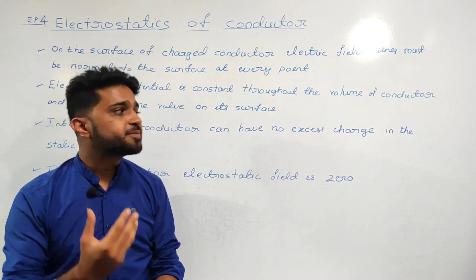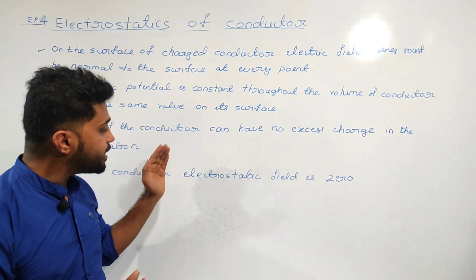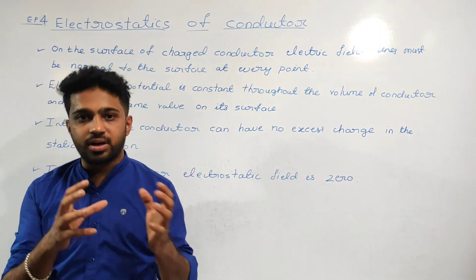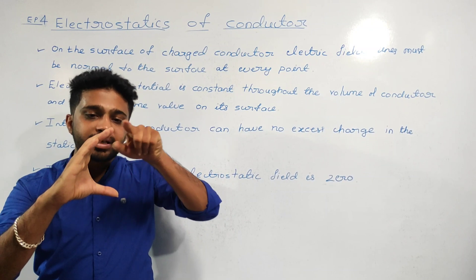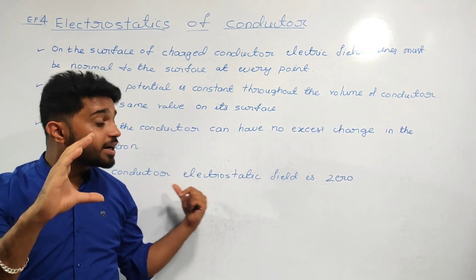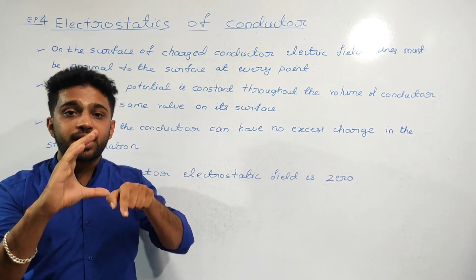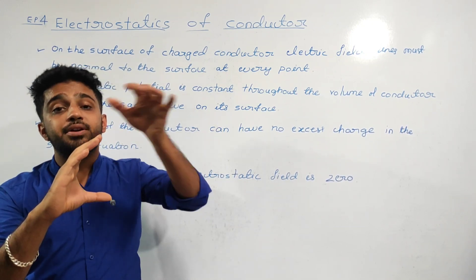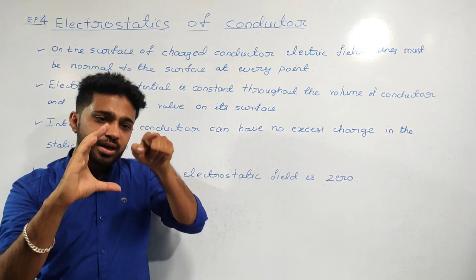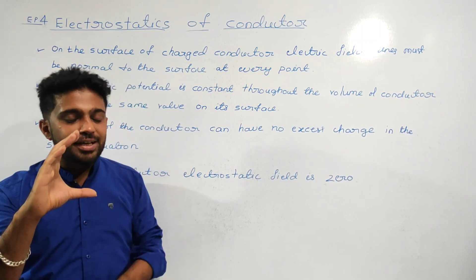Next point: inside the conductor, the electrostatic field is zero. The electric field inside the conductor is zero, and the electric field exists only around the surface of the conductor.